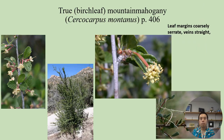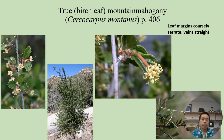Next up we have birchleaf mountain mahogany, or Cercocarpus montanus, found on page 406. In the photos you can see that the leaf margins are often coarsely serrate and the veins are straight.